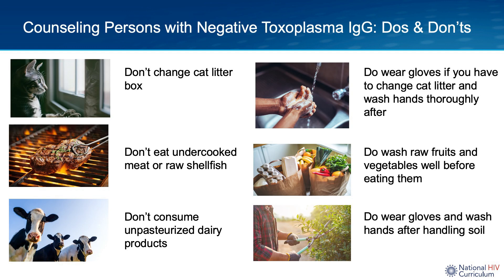This slide shows some counseling you can provide to individuals who have a negative serum toxo-IgG at baseline. By taking these precautions, it can help them reduce the risk of toxoplasmosis. Advise them not to change the cat litter box, or if they do, to wear gloves and wash hands thoroughly after. Avoid consumption of undercooked meat, raw shellfish, and unpasteurized dairy products. If consuming raw fruits or vegetables, wash them thoroughly. When handling soil, wear gloves and wash hands afterwards.